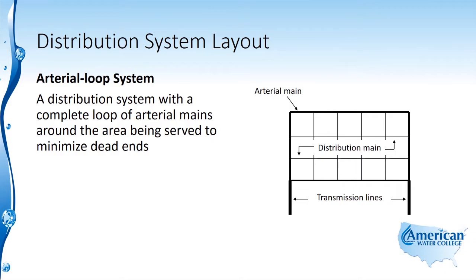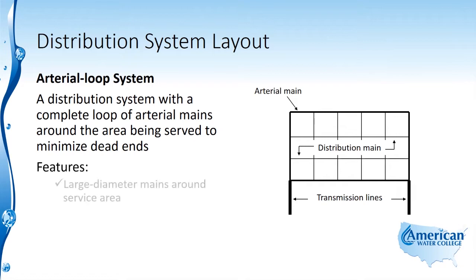An arterial loop system is a distribution system with a complete loop of arterial mains around the area being served to minimize dead ends. Features of an arterial loop system include large diameter mains around the service area.